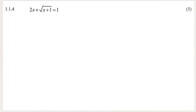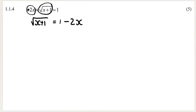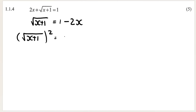Our next question is a square root equation. Our first step is to isolate the root — get it by itself — using inverse operations. The inverse of plus 2 is minus 2, so we subtract 2 from both sides of the equation. Then our second step is to square both sides of the equation and show that you are doing so. When squaring a square root, you are left with just the inside, so x plus 1 remains.